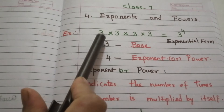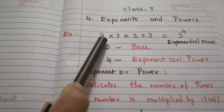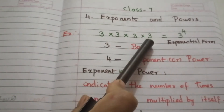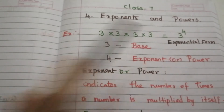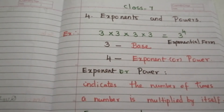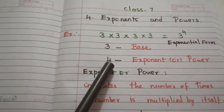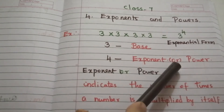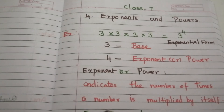Let us consider an example: 3 into 3 into 3 into 3. Here 3 is multiplied 4 times, and it is written as 3 power 4. This form is called exponential form. Here 3 is known as the base and 4 is known as the exponent or power. So exponent or power indicates the number of times a number is multiplied by itself.